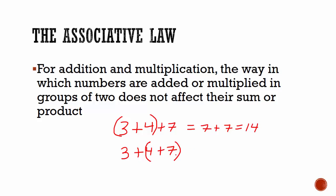If we add those in brackets first, we get 3 added to 4 plus 7. 3 added to 11 is equal to 14. We see that if we group numbers and add those first, it does not affect the result. The same can be applied to multiplication.